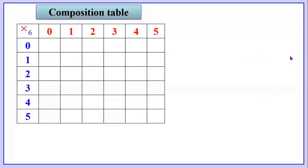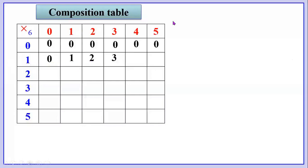Now let us complete the table. The first row headed by 0: 0 into 0 is 0, 0 into 1 is 0 — zero into any number is zero. Therefore this is 0, 0, 0, 0, 0. Now we are going to fill the row headed by number 1. 1 into 0 is 0, 1 into 1 is 1, 1 into 2 is 2, 1 into 3 is 3, 1 into 4 is 4.